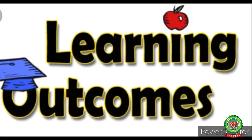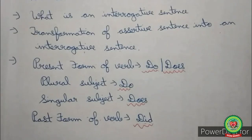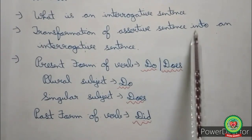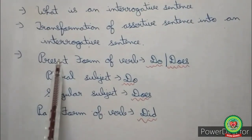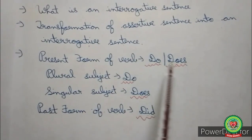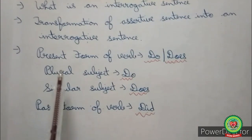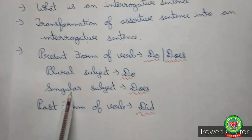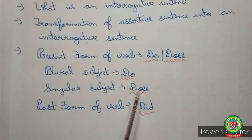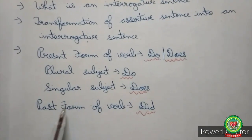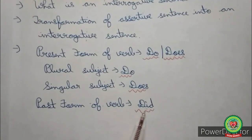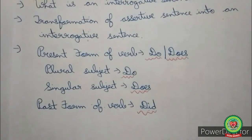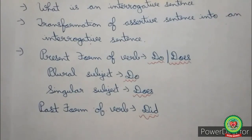So children, today we have learnt: what is an interrogative sentence, and the transformation of assertive sentences into interrogative sentences. When the present form of verb is given, we add do or does — do for plural subjects and does for singular subjects. When the past form of verb is given, we add did as the helping verb. I hope you are all clear with the chapter. Now follow the schedule in the SNAP homework and solve the exercises. Thank you.